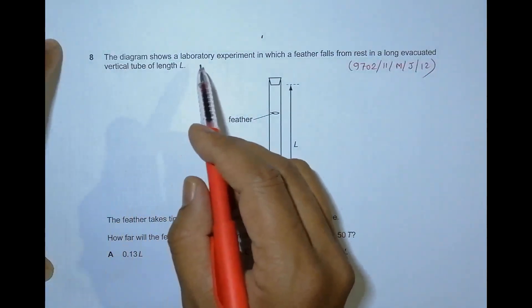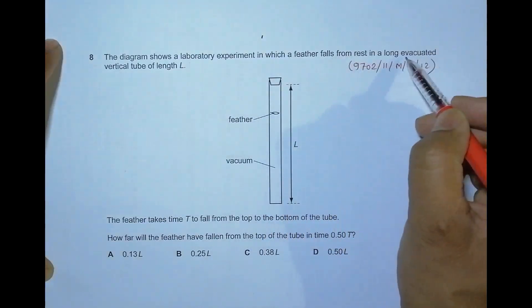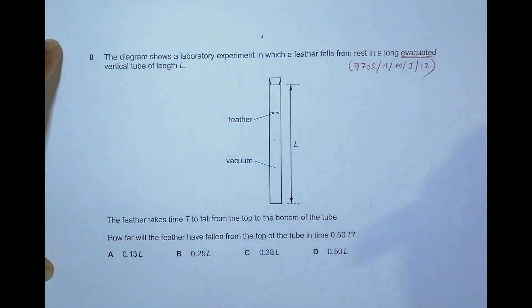The diagram shows a laboratory experiment in which a feather falls from rest in a long evacuated vertical tube of length L. Evacuated means that there is vacuum here and there's no role of air resistance.